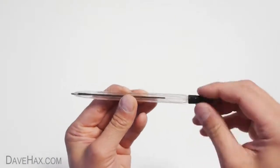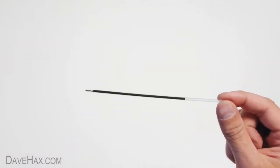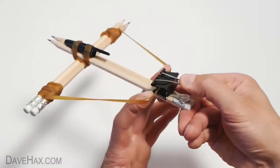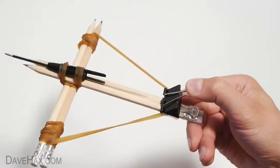For an arrow, we're going to unscrew the back of our ballpoint pen and take out the refill. Stretch the band back, load the arrow through the front and we're ready to fire.